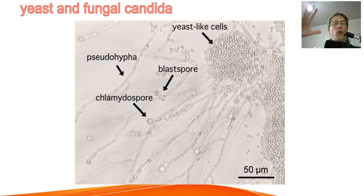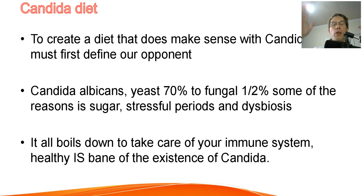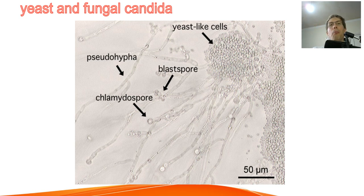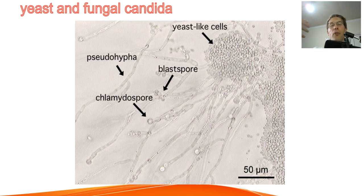Why does candida sometimes go from yeast to fungal form? There are about seven or eight reasons, but three main ones to cover now. Number one: if your diet is high in sugar. Fungal candida is way more competent than yeast candida when there is a lot of sugar — it's simply a better form. Given the food available in a very sugary diet, fungal candida survives longer, so candida will optimize itself to go into the fungal form.